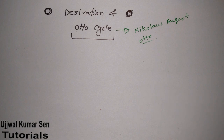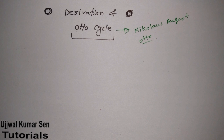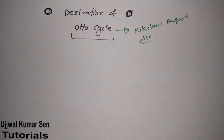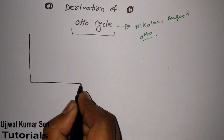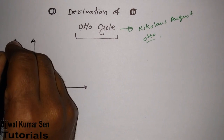In this tutorial I'm going to share with you the derivation of the Otto cycle — that means how you can find out the efficiency of the Otto cycle, including the PV diagram and the TS diagram. First of all, if you want to learn the derivation of any cycle, learn to draw the diagram of that cycle.